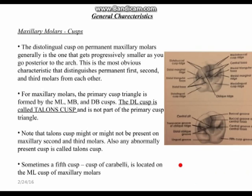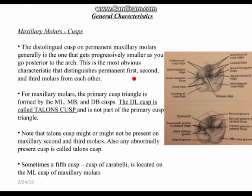Now let's talk about cusps on the maxillary molars. The distolingual cusp on a permanent maxillary molar is the one that gets progressively smaller as you go posterior in the arch — it's largest on the maxillary first molar and decreases on the second and third. This is the most obvious characteristic to distinguish permanent first, second, and third molars from each other.